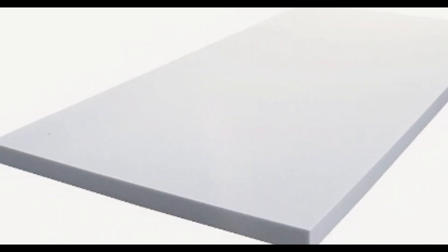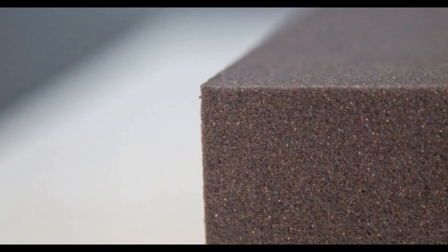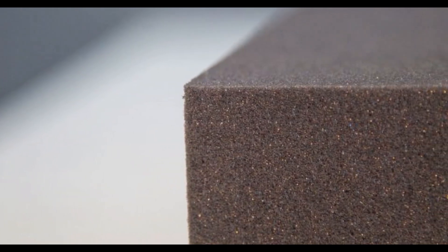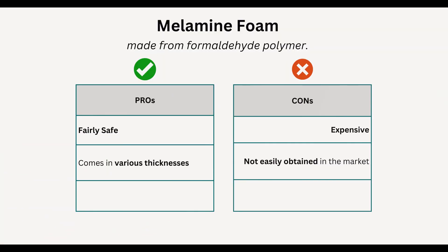Melamine foam is made of formaldehyde polymer, which is actually toxic to the human body. However, the way melamine foams are molded makes them safer for your home environment, though it is not the most friendly material. Melamine foam is also very expensive and not easily obtained.